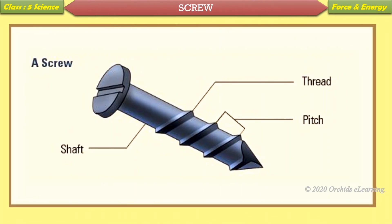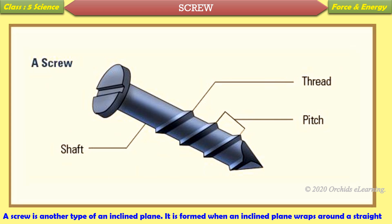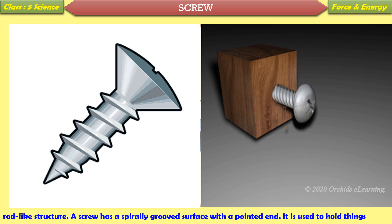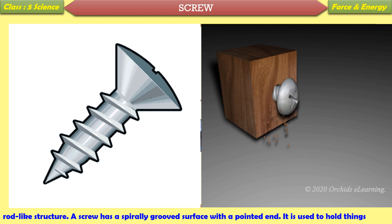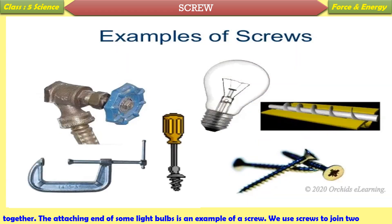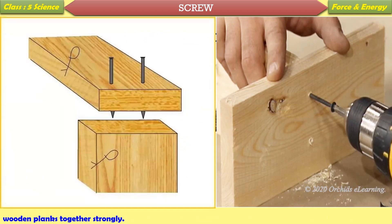Screw: A screw is another type of inclined plane. It is formed when an inclined plane wraps around a straight rod-like structure. A screw has a spirally grooved surface with a pointed end. It is used to hold things together. The attaching end of some light bulbs is an example of a screw. We also use screws to join two wooden planks together strongly.